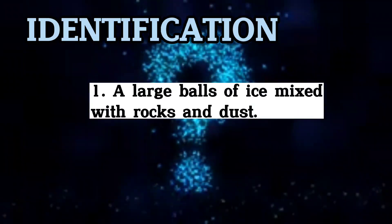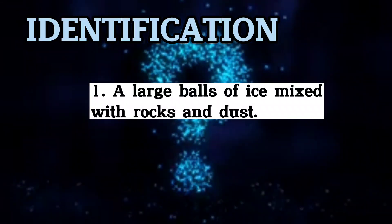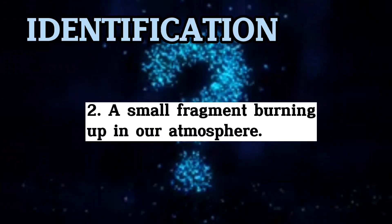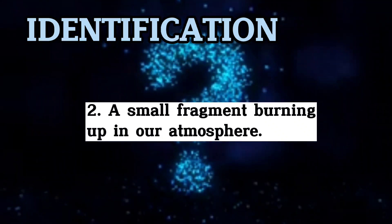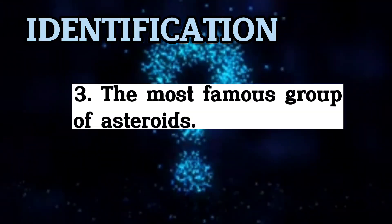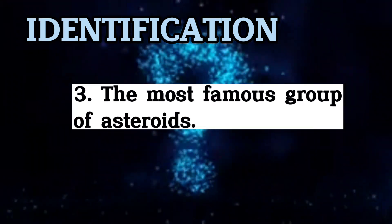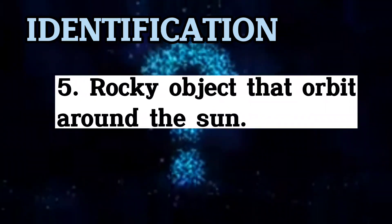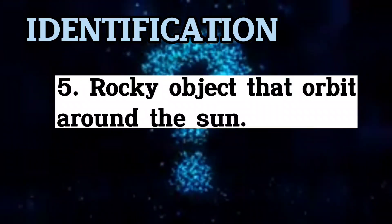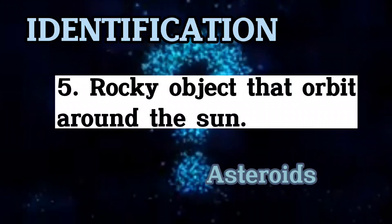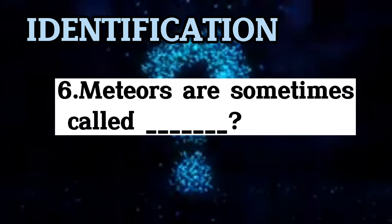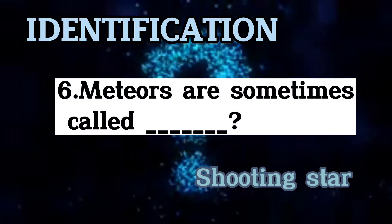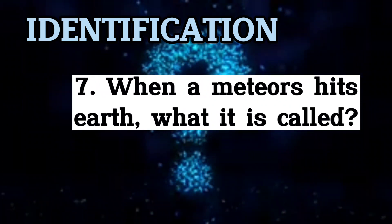Now let's put your knowledge to a test. One: large balls of ice mixed with rocks and dust. Two: a small fragment burning up in our atmosphere. Three: the most famous group of asteroids. Four: a belt composed of comets, minor planets, and other bodies located beyond the orbit of Neptune. Five: rocky objects that orbit around the Sun.